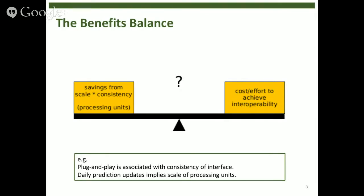And clearly we have the possibility that you might have an idea like plug and play where you achieve some saving because of consistency of the interface, but also you might have an idea that increased scale of operation might drive from daily prediction updates. And so scale and consistency may be related, but there may also be slightly different issues here. On the other side of the equation, clearly, what does it cost to achieve interoperability?